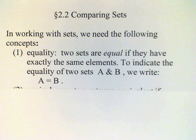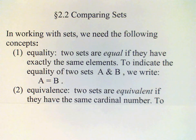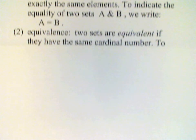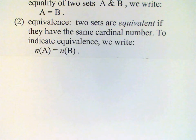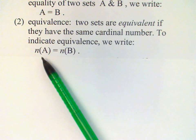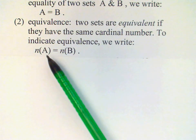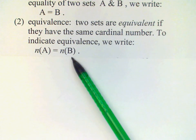We'll also find it useful to say that two sets are equivalent if they have the same cardinal number. Now recall that the cardinal number of a set is the number of elements in the set. And we use the notation n(A) to designate the cardinal number or the number of elements in that set. And n(B) would be the number of elements in set B.